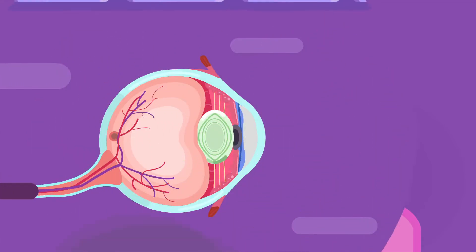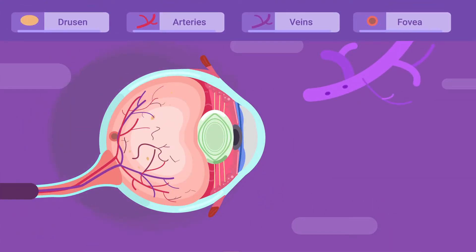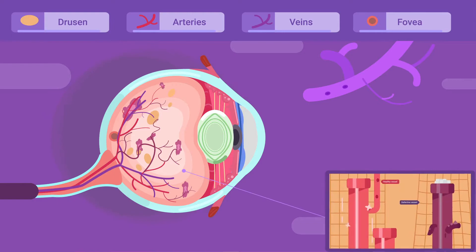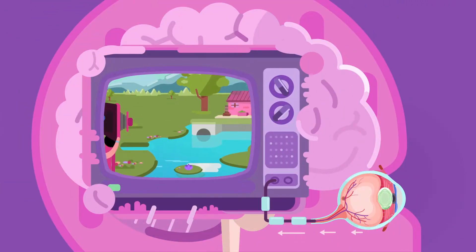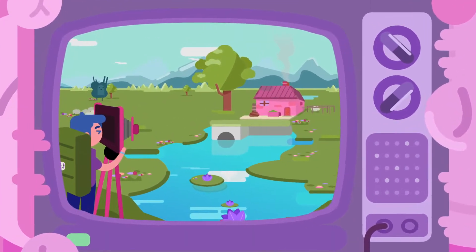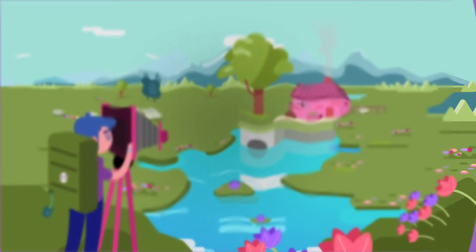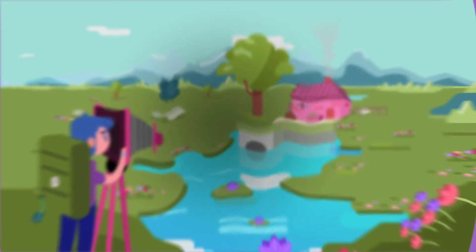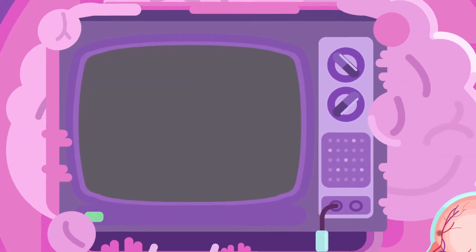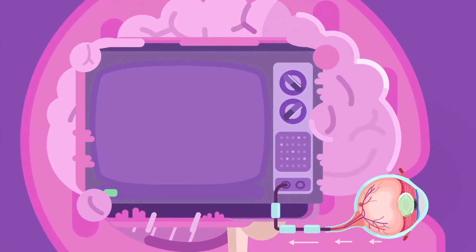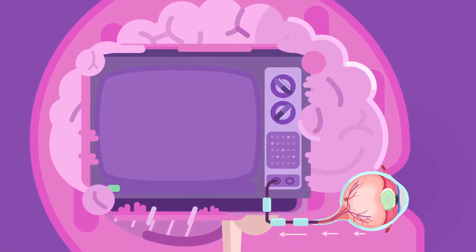With diabetic retinopathy, the blood vessels that reach the retina are damaged. The retina loses its ability to properly perceive light rays, and the patient starts to see black dots in his visual field, blurred vision, a decrease in the vividness of colors, and functional loss of vision. However, the patient may also initially present no symptoms.